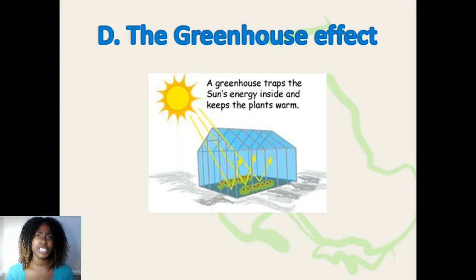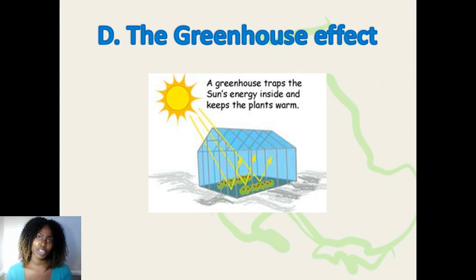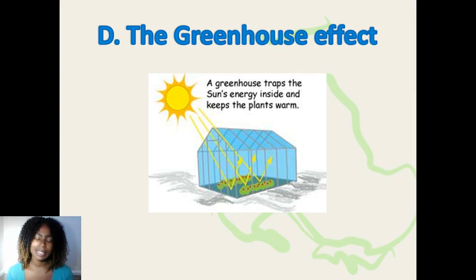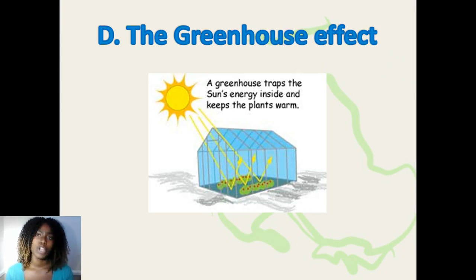Let's refresh our memory a little bit. Air is made out of particles that are constantly moving in rapid motion. Light, for the purpose of this workshop, is a wave. The sky is blue because of our human eyes being poorly sensitive to the violet color and strongly sensitive to the blue color. Short waves are scattered in the upper atmosphere.